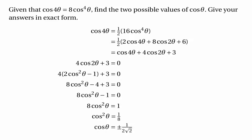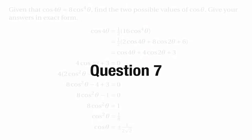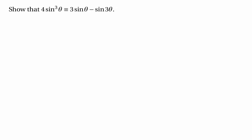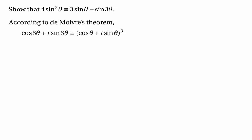That's the end of that question. Now let's move on to question 7. This tells us to show that 4 sin³θ is identically equal to 3 sin θ minus sin 3θ. We can prove this using De Moivre's theorem: cos 3θ plus i sin 3θ is identically equal to (cos θ + i sin θ)³.